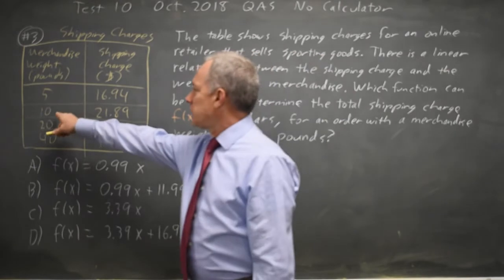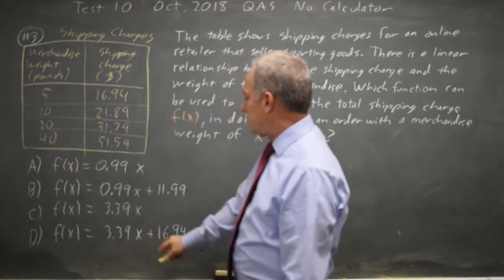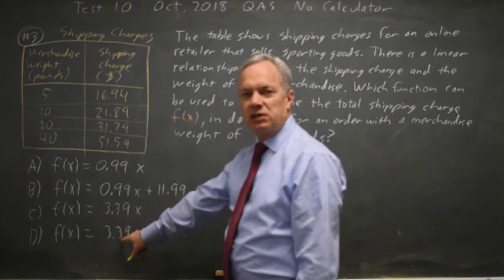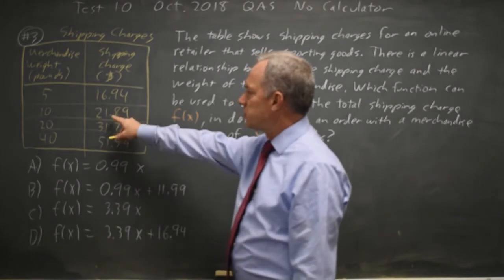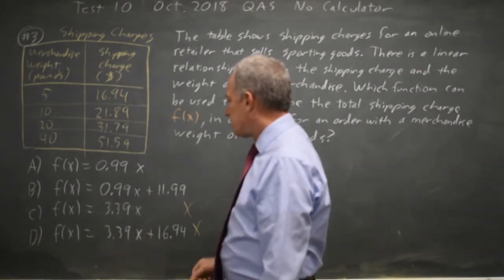Let's plug in x equals 10 because that's an easy number to work with. At x equals 10, choice C is more than $33 and choice D is also more than $33, but 10 should only be $21. So choices C and D are wrong.